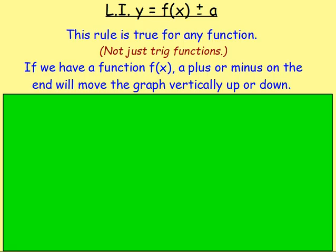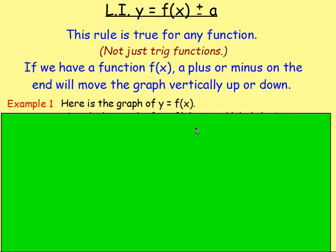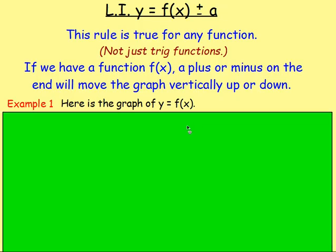This rule — with the plus or minus on the end — is true for any function, not just sine x or cos x. Whenever you have a function with a plus or minus on the end, it's going to move the graph vertically up or down. Let's take an example.